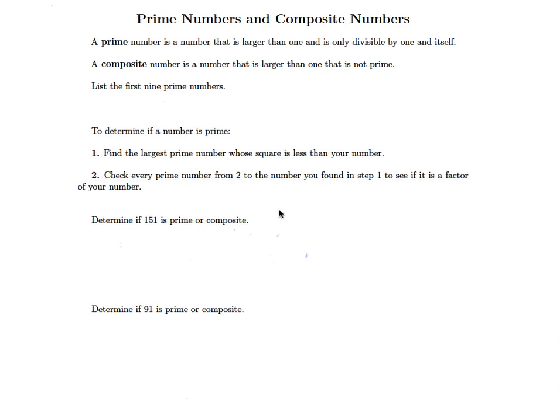In this lesson we're going to look at prime numbers and composite numbers. A prime number is a number that is larger than one and is only divisible by one and itself. A composite number is a number that is larger than one that is not prime. So all numbers bigger than one that don't fall into the prime category we call composite.